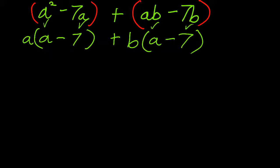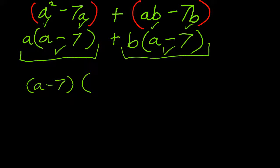Now, consider the entire polynomial. The plus in the middle separates the first term from the second term. Notice that both of these terms have an a minus 7. I will pull a minus 7 out as the GCF, and then I'll write the leftovers: a plus b.